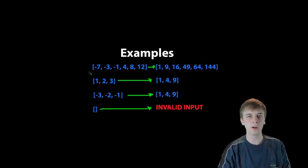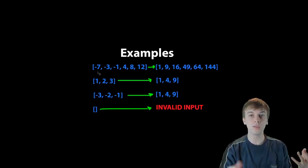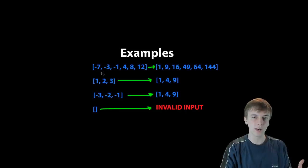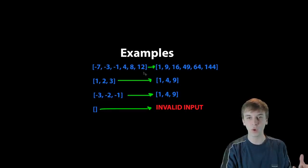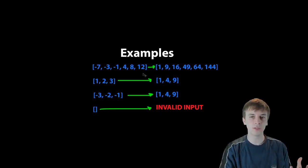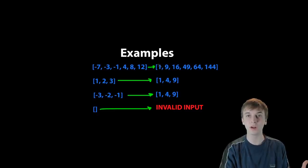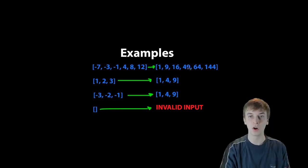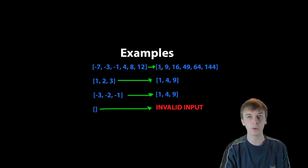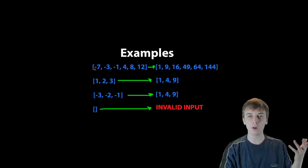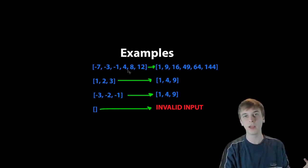Let's look at some examples. These are some input arrays on the left side and this would be what we're outputting after our function is done. All of the arrays we get as input are going to be sorted — you can see we have some negative and positive values. We're going to be squaring all the elements and returning an array of all the squares, but because the output array also has to be sorted, the first element doesn't necessarily become the first element of the output array. The first value, negative seven, squared becomes 49, which is actually in the middle of our output array, whereas negative one squared is one and that's the first element of our output.